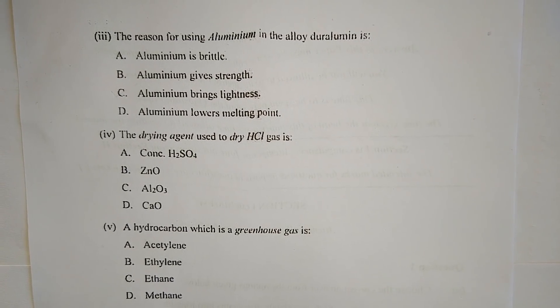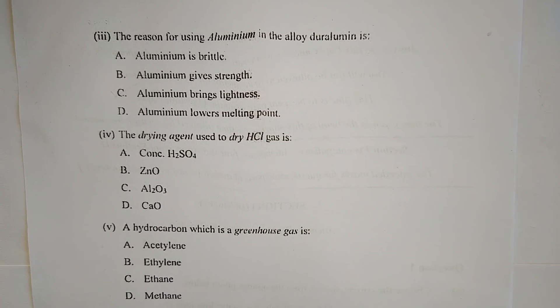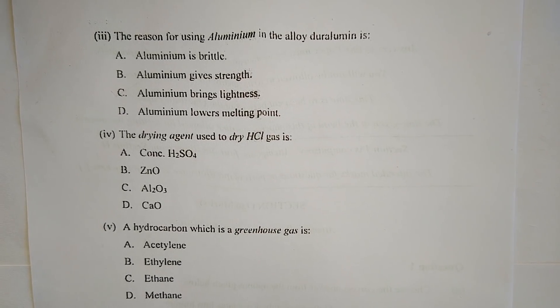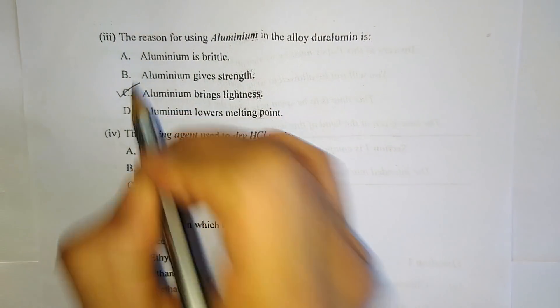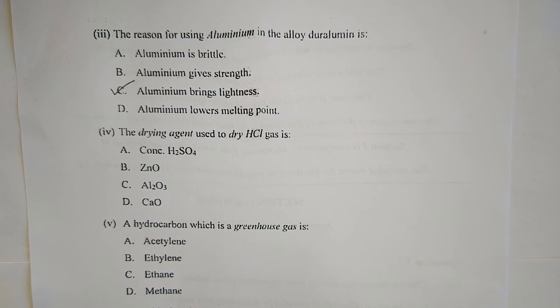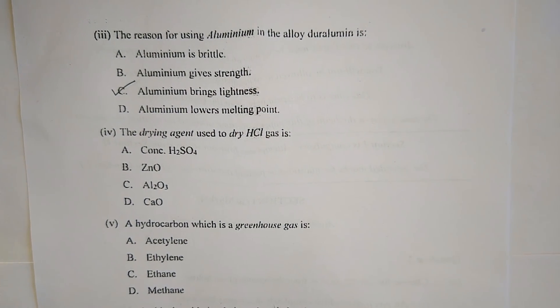Number three: The reason for using aluminium in the alloy duralumin is A. aluminium is brittle, B. aluminium gives strength, C. aluminium brings lightness, or D. aluminium lowers melting point. The correct answer is C.